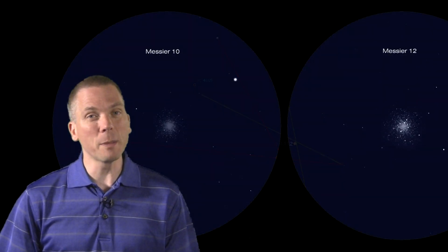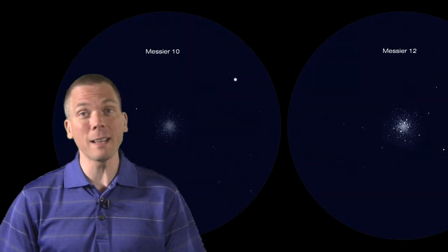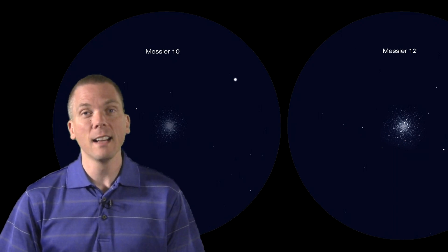Visually, the stellarium depictions are a bit deceiving, as I find Messier 10 to appear a bit brighter than Messier 12. The core appears brighter and more compact, thus seeming to be more visually appealing at the eyepiece.